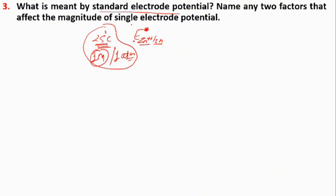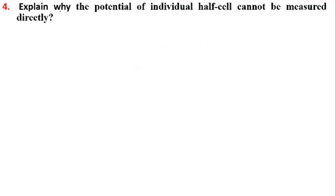Name any two factors that affect the magnitude of single electrode potential. There are two factors that affect the magnitude of single electrode potential. The potential of individual half-cells cannot be measured directly.